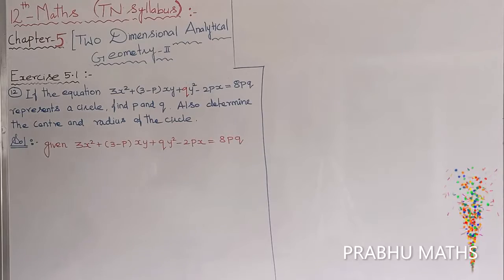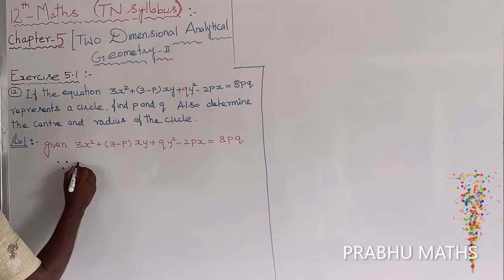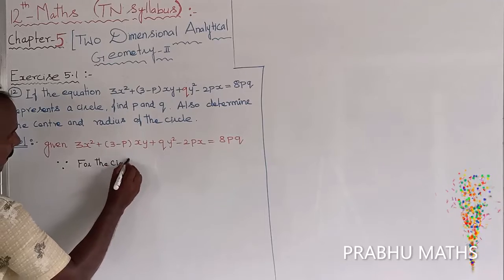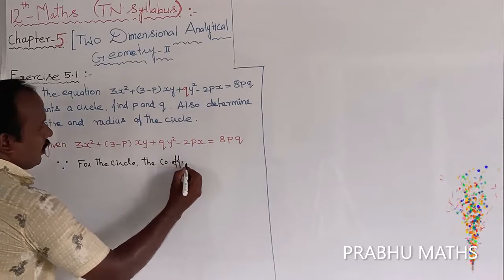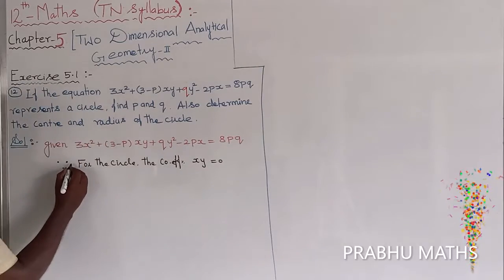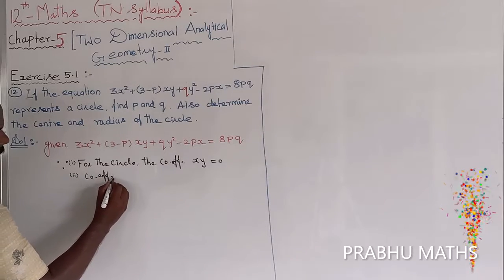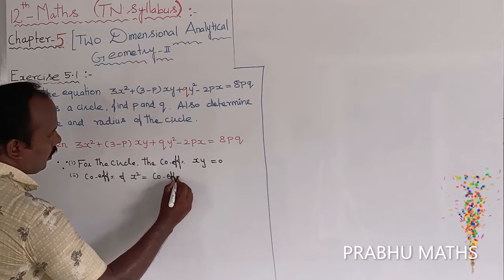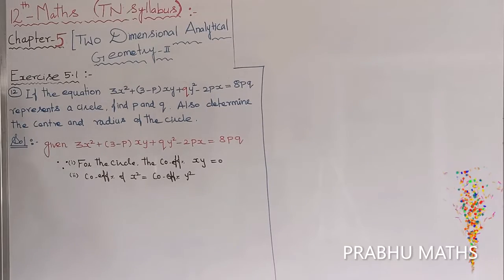The properties of a circle are: Property 1 — the coefficient of xy must equal 0. Property 2 — the coefficient of x squared must equal the coefficient of y squared. We will now apply both these properties to the given equation.